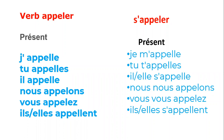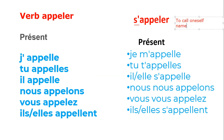Hi everyone, bonjour. Today in this video we are going to learn about the difference between the verb 'appeler' and 's'appeler'. The meaning of verb 'appeler' is to call. But 's'appeler' — you can see here the 's' apostrophe — it means it is a pronominal verb. Whenever you see 'se' or 's apostrophe' before a verb, it means it's a pronominal verb and the action is done by the subject itself. It means to call oneself. We use 's'appeler' when we say our name, or when we ask someone's name.